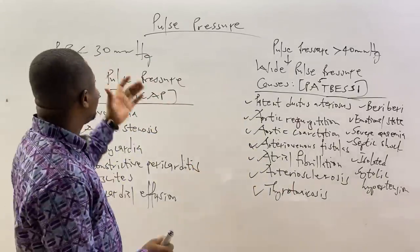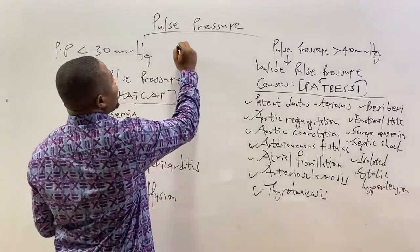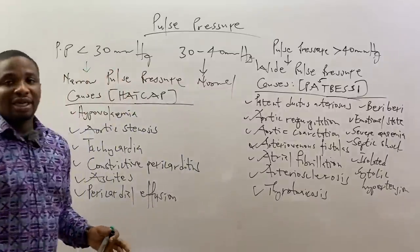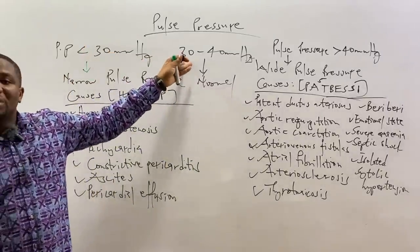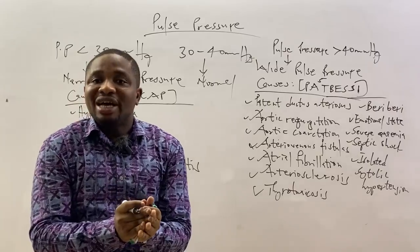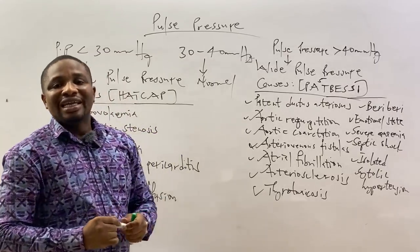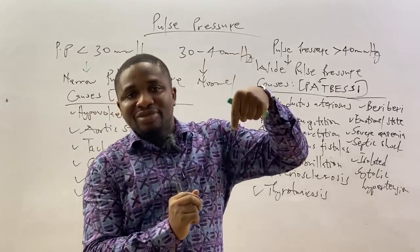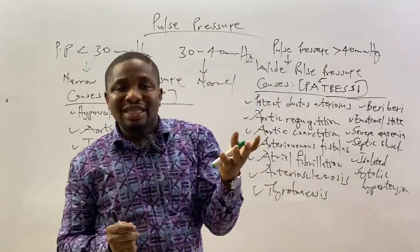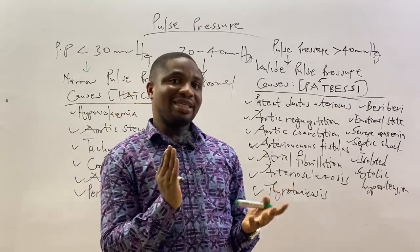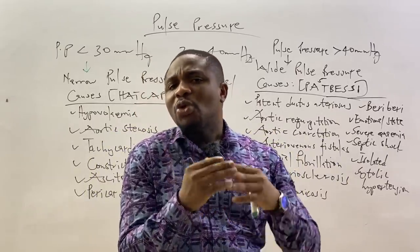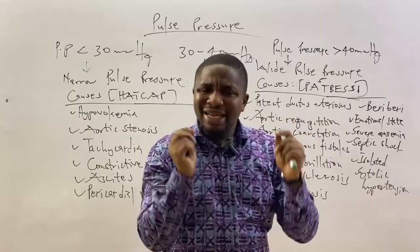When the pulse pressure goes below 30 mmHg — the lower limit of normal — we say that the pulse pressure is narrow. This can happen when: the systolic blood pressure is decreasing while diastolic stays the same; or the systolic is constant while diastolic increases; or the systolic is decreasing while diastolic is increasing. Those are the three scenarios that can give you narrow pulse pressure.